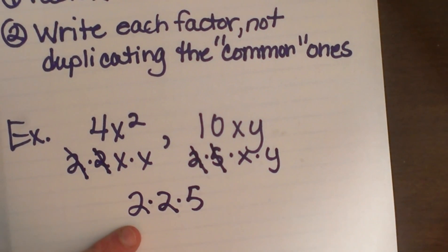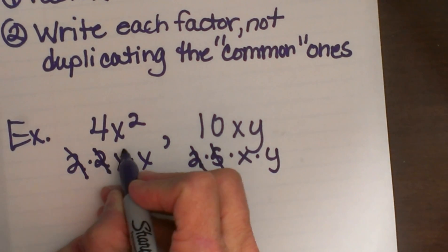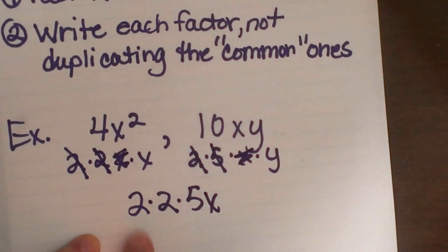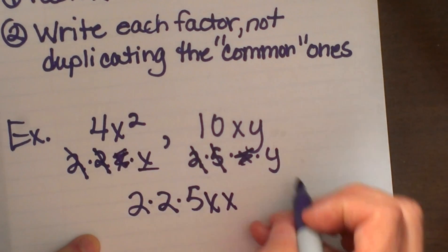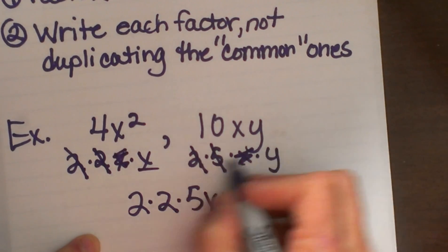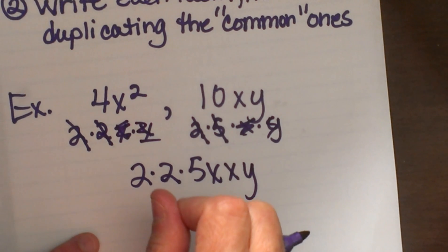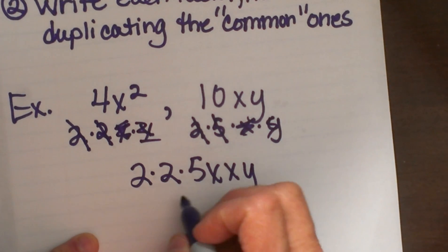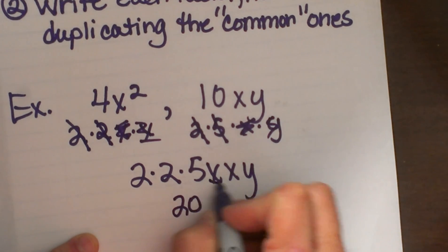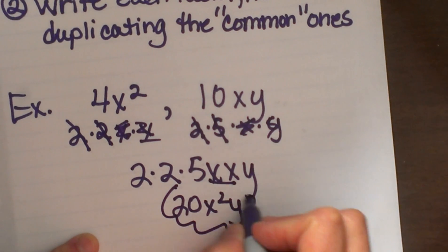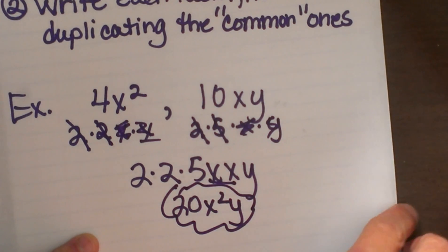Now let's look at not duplicating the variables. I am going to pull an x down here, but that x accounts for both this one and this one because I do not want to duplicate. I am going to pull another x down to represent this x and then I am going to bring down the y. So now I have all my factors represented. Now let's just multiply it together to look at it in a cleaner form. We said 2 times 2 times 5 that multiplies to 20. X times x is x squared and then y. So my least common multiple is 20x squared y.